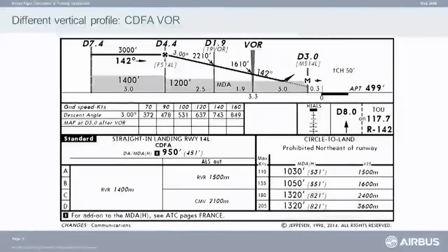We have other approaches — constant descent flight path angle. If you look into the regulation, it could be either an angle — you can select the flight path angle for the descent, in this case 3 degrees — but descending at a fixed vertical speed is, as well, a constant descent flight angle in regulation. So, you can descend based on your ground speed — for instance, at 140 knots — at a rate of descent of about 750 feet per minute continuously to follow that profile. But, of course, you have to respect the minimum altitude at the different points during the vertical descent.